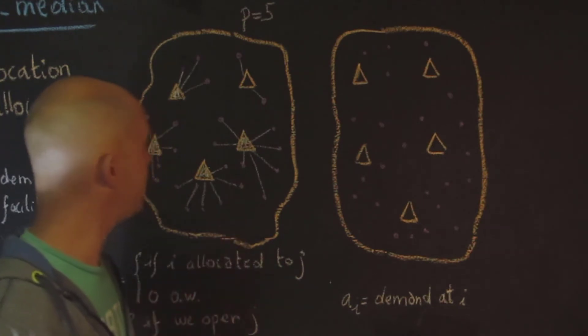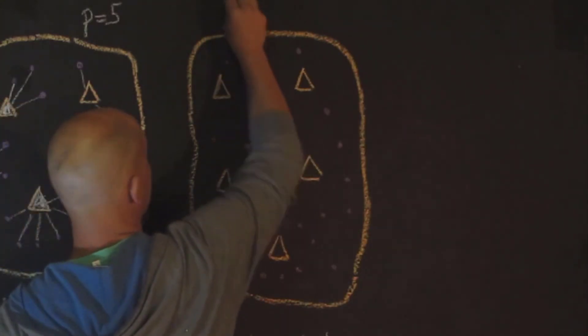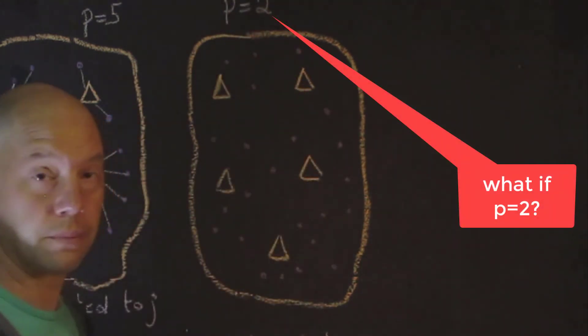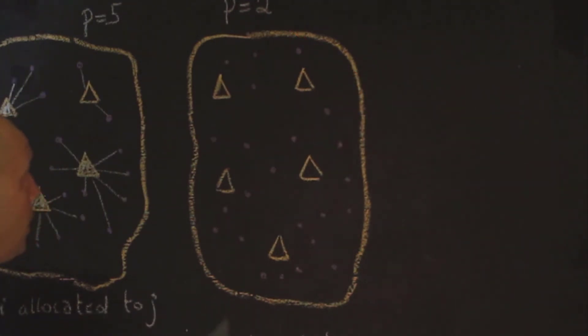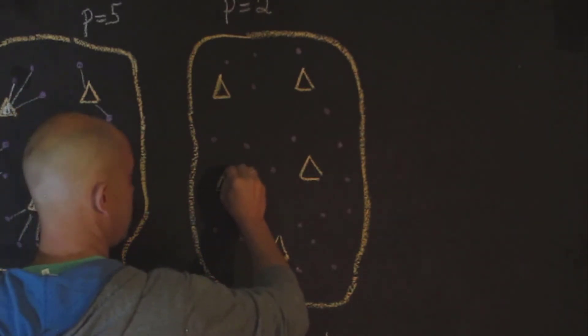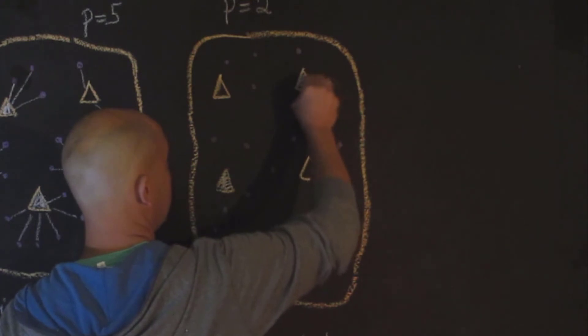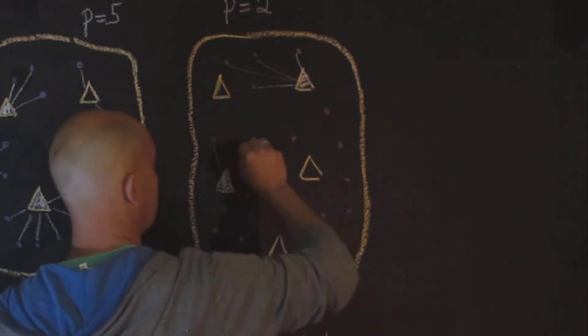This one would be much harder to solve. If P is equal to 2, which do you choose? I don't know the answer. We could do all the combinations if we wanted to. But let's assume that we have the optimal solution. And let's suppose that this is the optimal solution. Then you will see that generally, the demand node will be assigned to their closest facility.